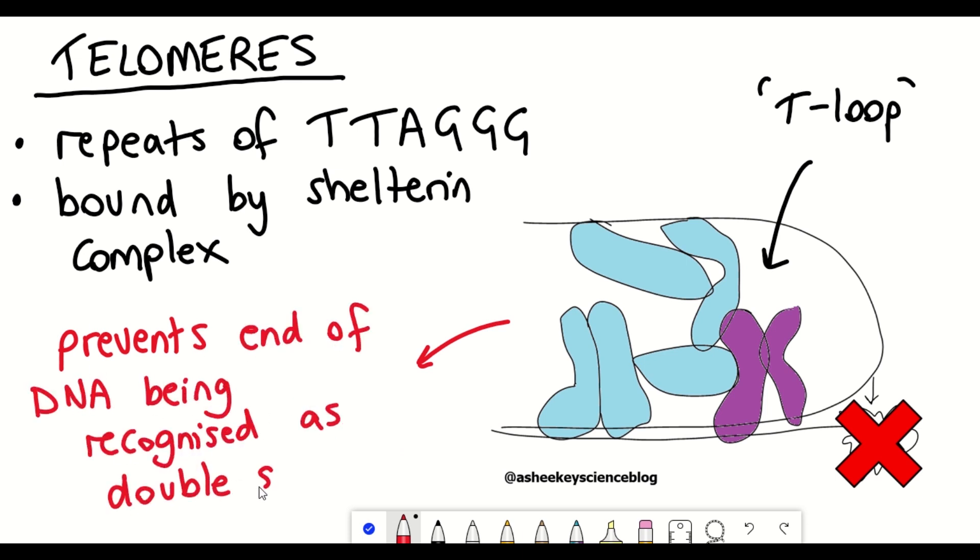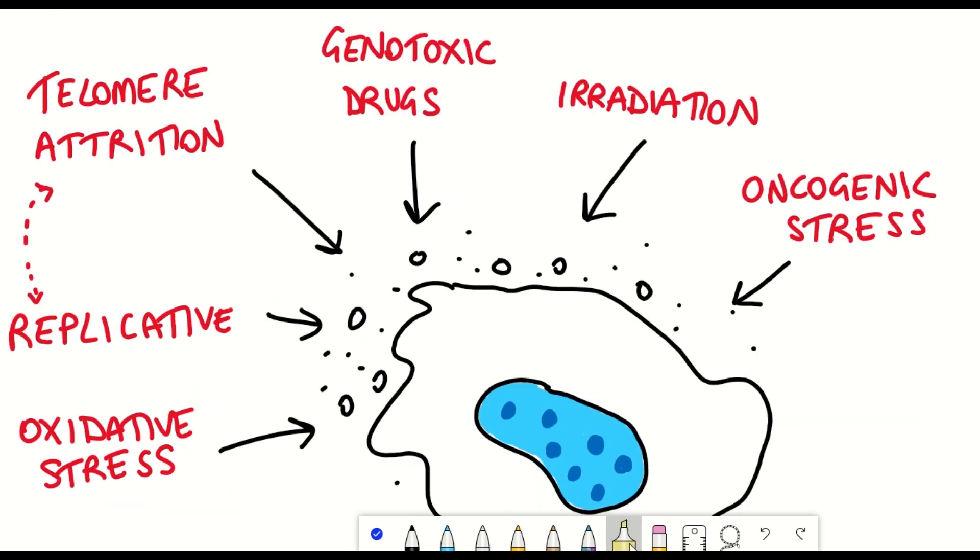But the problem is, as these telomeres shorten, that protection gets lost and DNA damage can be activated within a cell that can cause cellular senescence.